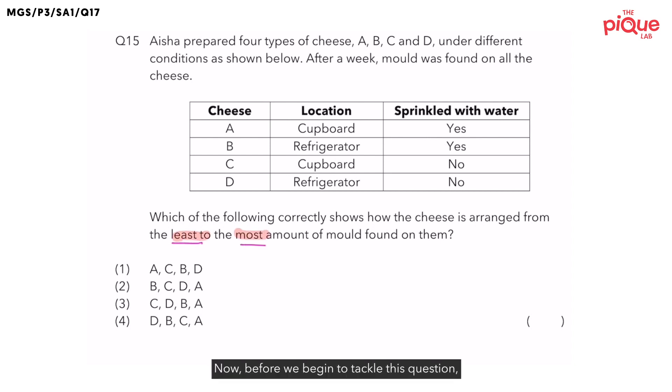Now before we begin to tackle this question, let's first ask ourselves: Mold, what group of organism does mold belong to? Mold belongs to the group of organism known as fungi. Now let's recall what conditions does the mold need in order for it to grow?